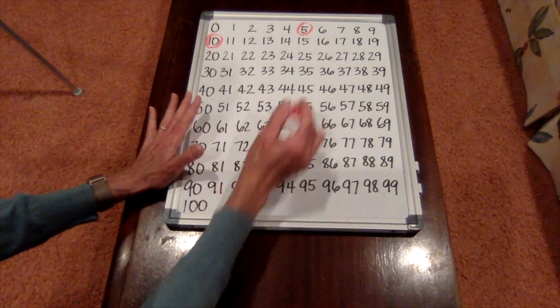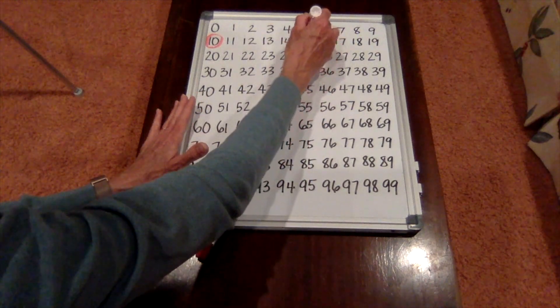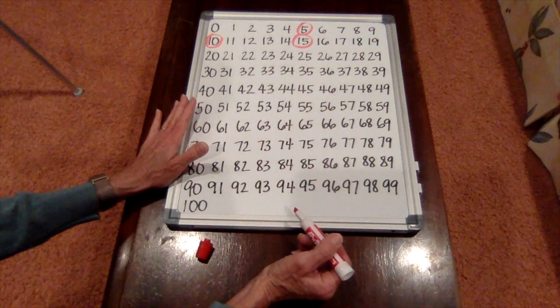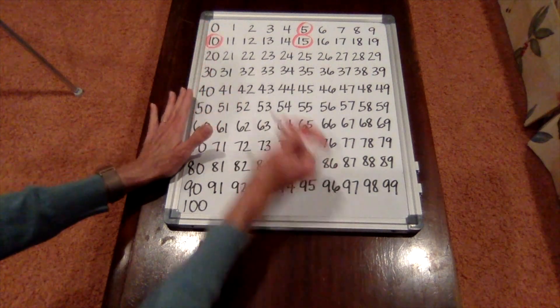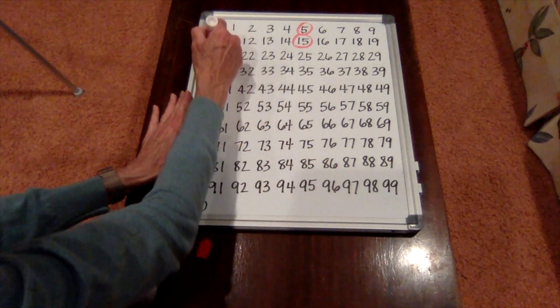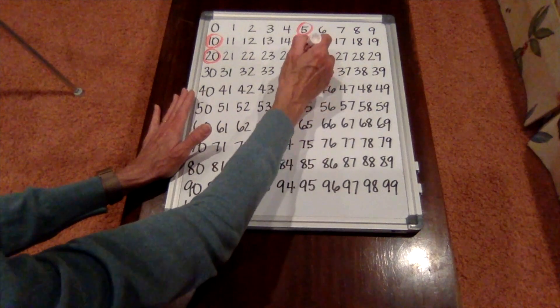And then we do five more: fifteen. And then one more set of five: twenty. Twenty-five.